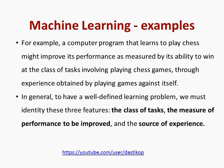Let me illustrate with an example. A computer program that learns to play chess might improve its performance, as measured by its ability to win at the class of tasks involving playing chess games, through experience obtained by playing the game against itself. In general, to have a well-defined learning problem, we must identify these three features: the class of tasks, the measure of performance to be improved, and the source of experience.